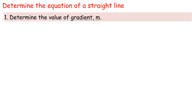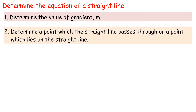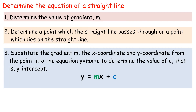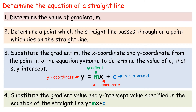To determine the equation of a straight line: 1. Determine the value of gradient m. 2. Determine a point which the straight line passes through or a point which lies on the straight line. 3. Substitute the gradient m, the x-coordinate and y-coordinate from the point into y equals mx plus c to find the value of c, that is the y-intercept. 4. Substitute the gradient and y-intercept into the equation y equals mx plus c.